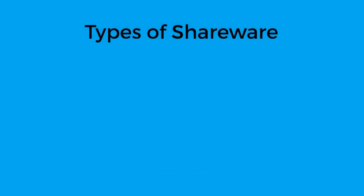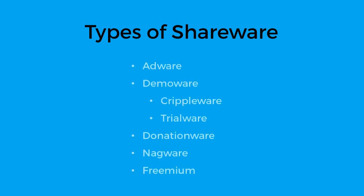Shareware is proprietary software which is encouraged to be copied. Shareware can be adware, which keeps showing ads, or demoware. Demoware is of two types: cripleware, where essential features like printing or saving are disabled, or trialware, where the software can only be used for a limited amount of time.